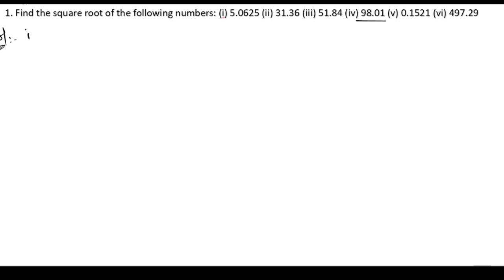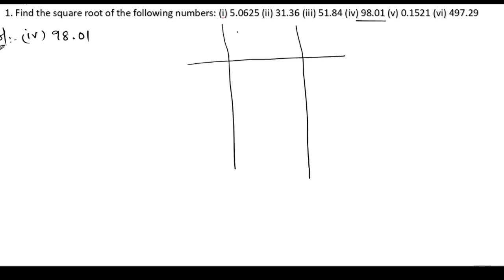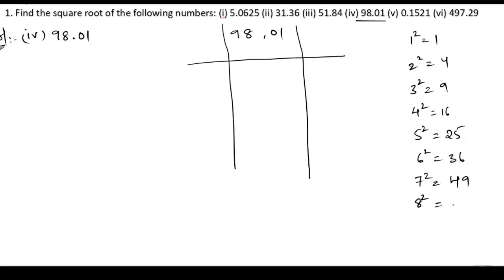Fourth bit: let us solve 98.01. We know the squares: 1 squared is 1, 2 squared is 4, 3 squared is 9, 4 squared is 16, 5 squared is 25, 6 squared is 36, 7 squared is 49, 8 squared is 64, 9 squared is 81, 10 squared is 100. The nearest number to 98 is 81. So we take 9: 9 nines are 81.